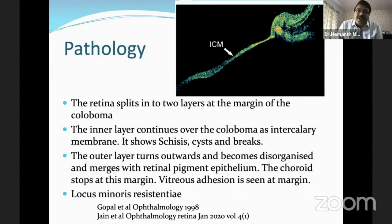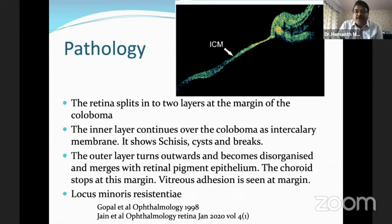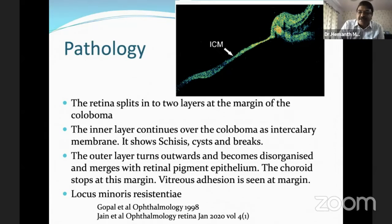Swept-source OCT shows that the ICM can have schisis, cysts, and breaks — additional changes which predispose the ICM to develop breaks. The outer layer turns outward, becomes disorganized, and merges with the retinal pigment epithelium. The choroid also stops at this margin. We also see vitreous adhesion at this margin, making it very crucial in the occurrence of retinal detachment. This margin is called the locus minoris resistentiae.